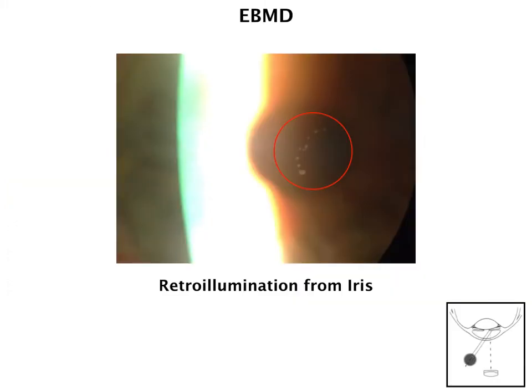Another difficult condition to photograph is the epithelial basement membrane dystrophy, or MAPDOT dystrophy. These are very, very subtle. The best way to take this type of image is using retroillumination from the iris, especially over a dilated pupil or a darker iris. Again, these are white in color, so having that darker background will help to highlight those dystrophies.